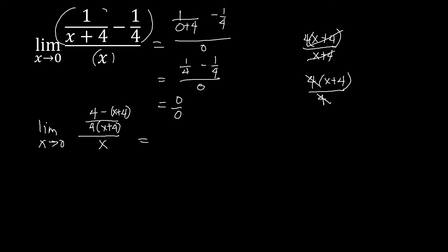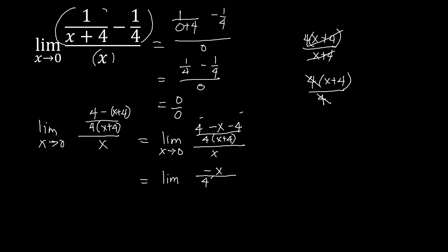We can now simplify our numerator part. This is the limit of 4, and then the minus symbol is distributed inside the parenthesis — so that means 4 minus x, and then we have minus 4. Over 4 times (x plus 4), all over x, as x approaches 0. So we simplify the numerator: 4 minus 4 gives 0, so we copy the negative x over 4(x plus 4).